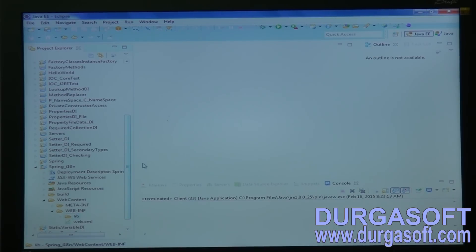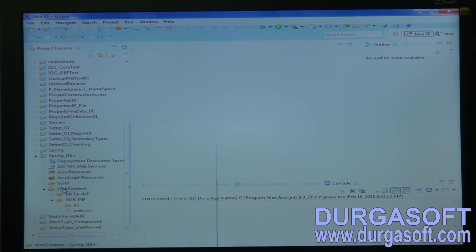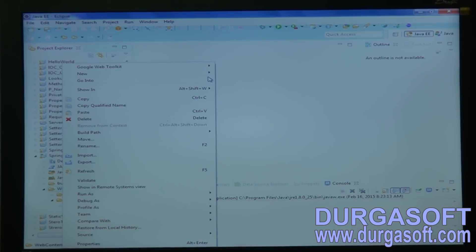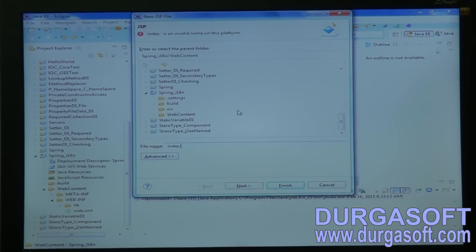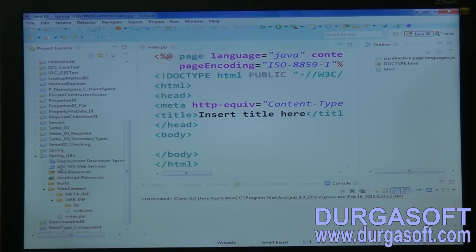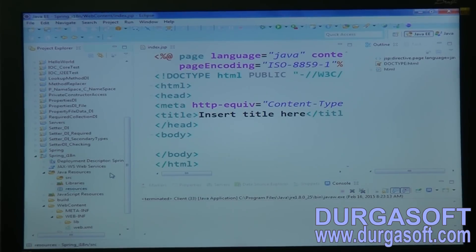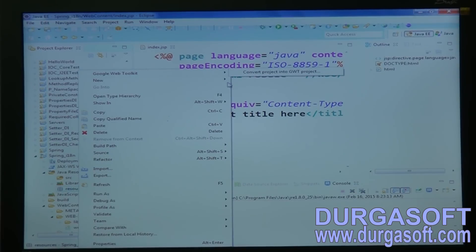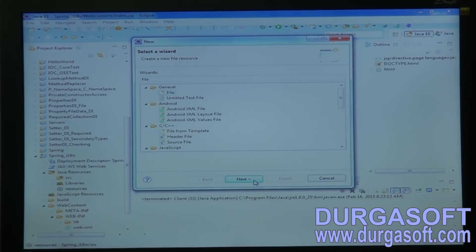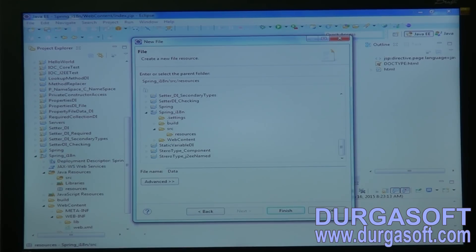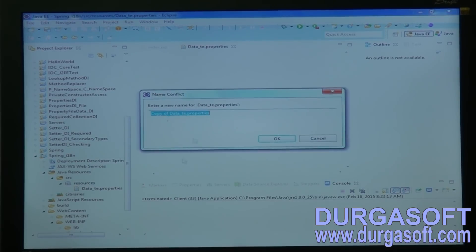Okay, for runtime environment and create one index page, index.jsp page. And here create some properties files under SRC, create one package resources and create properties files here. New file, data underscore te dot properties and create one more properties, data underscore.